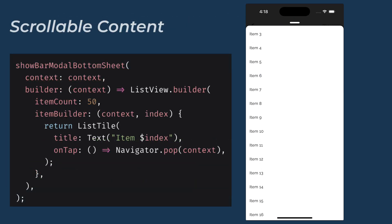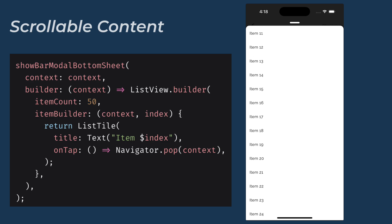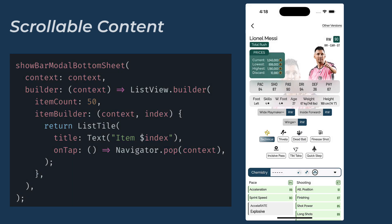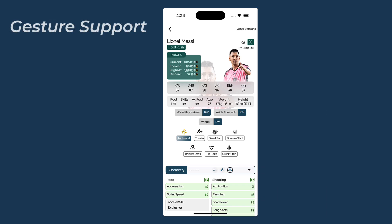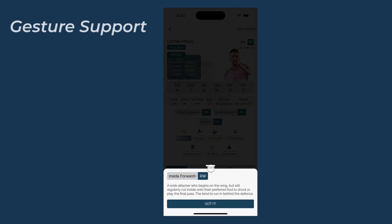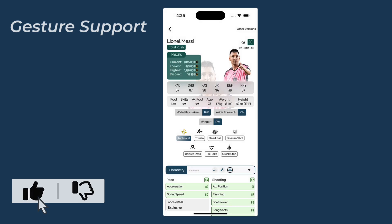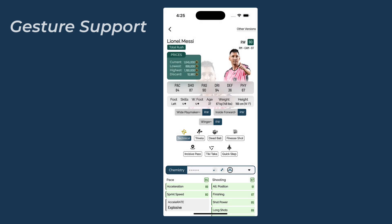It seamlessly supports scrollable content inside the bottom sheet. You can easily implement scrollable views such as list view, grid view, or custom scrollable widgets within the bottom sheet, ensuring a smooth experience. One of the standard features of modal bottom sheets is its built-in support for dismissing the bottom sheet using swipe gestures. This gesture support provides a more intuitive and native feel, allowing users to swipe down to dismiss the bottom sheet.